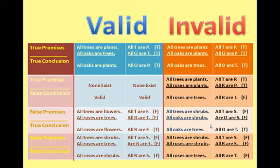Take a look at the first row. This combination of truth value is true premises and true conclusion. In a valid structure, you can see an example where all the statements are true. Likewise, there is an example where the structure is invalid but also shows true premises and a true conclusion. How do I know that this structure is invalid? I only need to find a single substitution instance where I find true premises and a false conclusion.